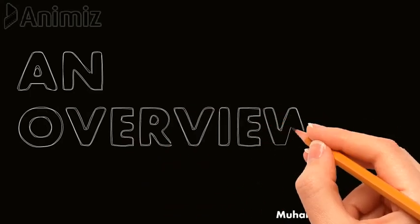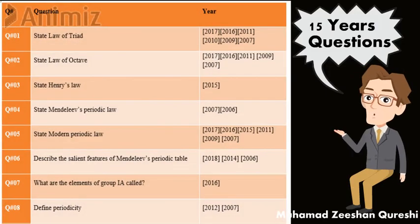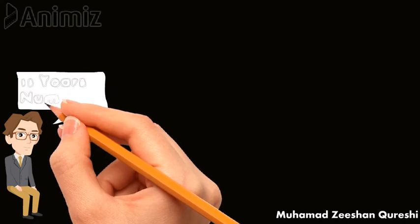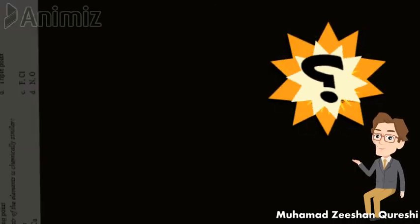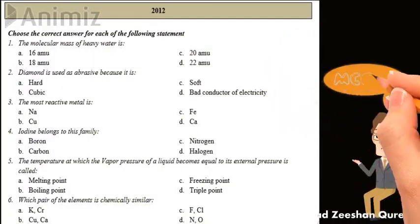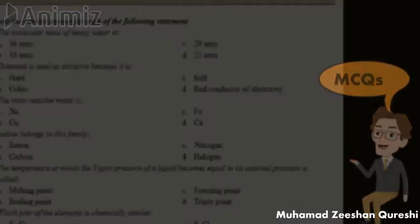Now have a look at an overview of the course. This shows the theme of the 15-year questions — for example, the first question 'state the law of conservation of mass' has appeared in the following mentioned years. We will also solve numericals from the past 15 years in this way. For MCQs, here is a sample from 2012 which includes the multiple choice questions.